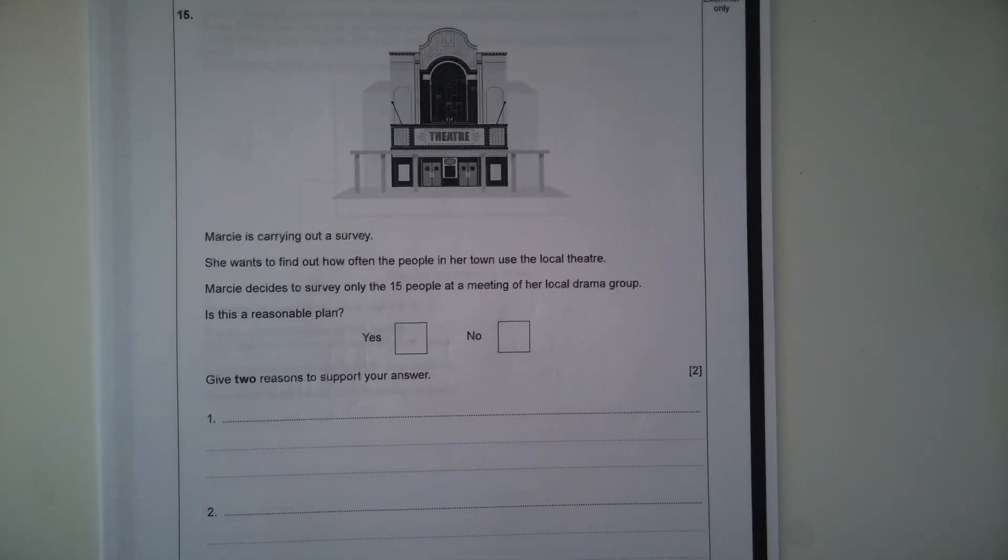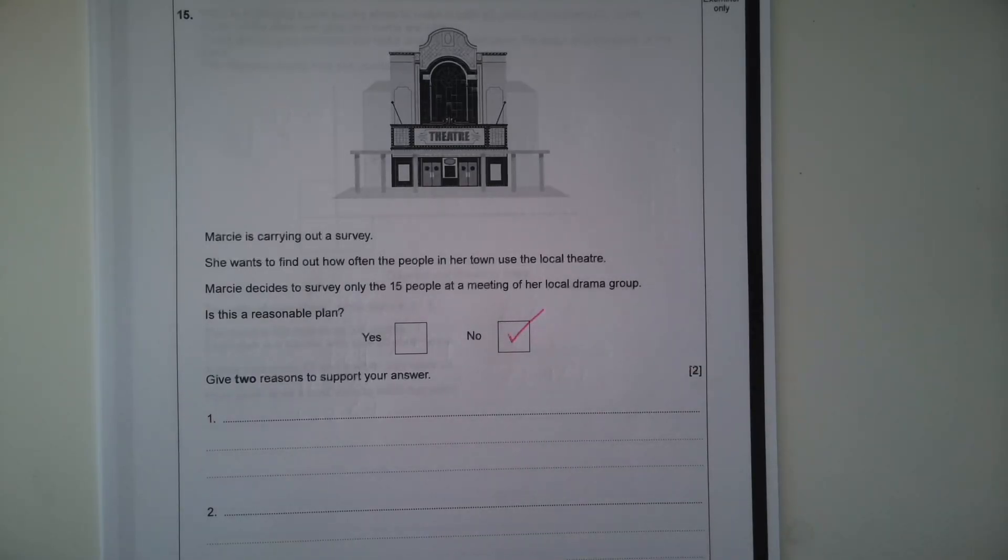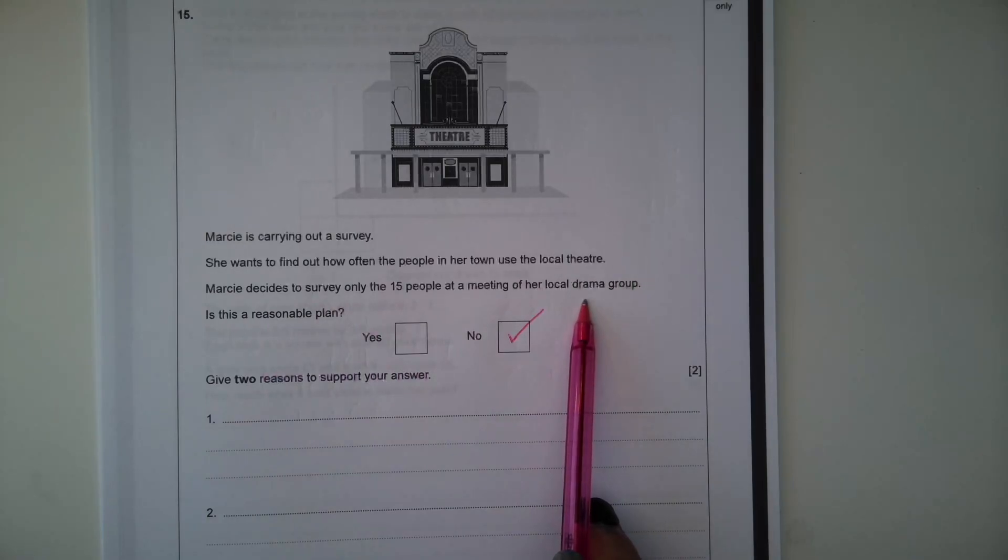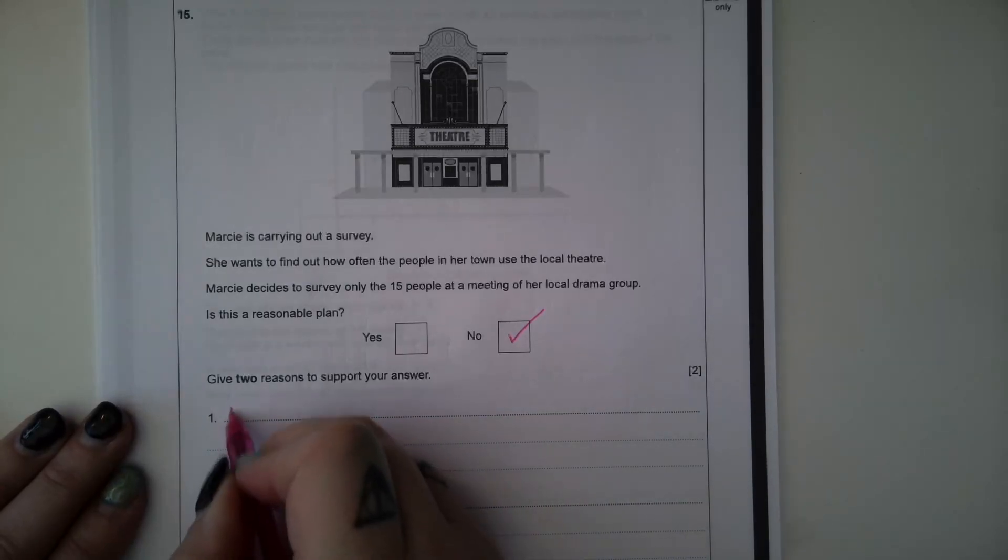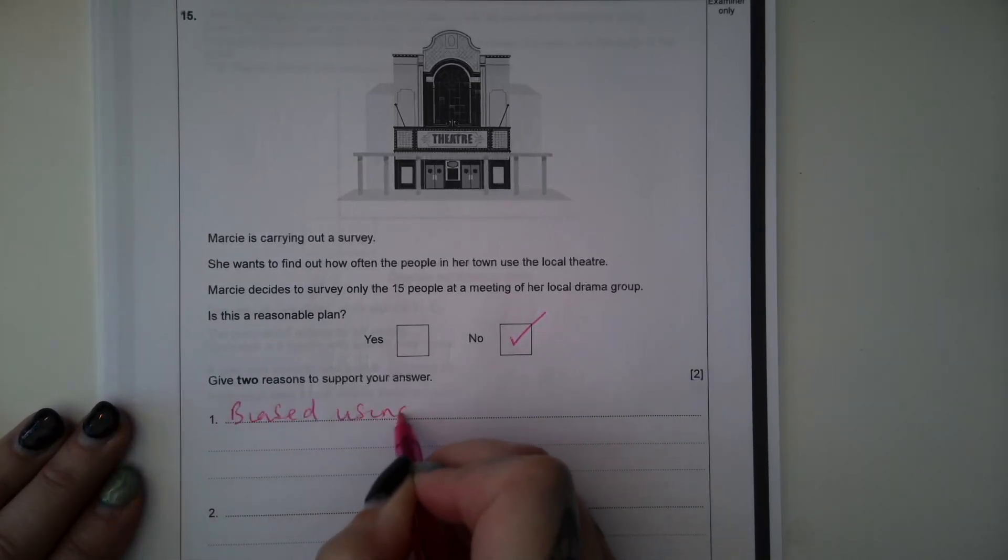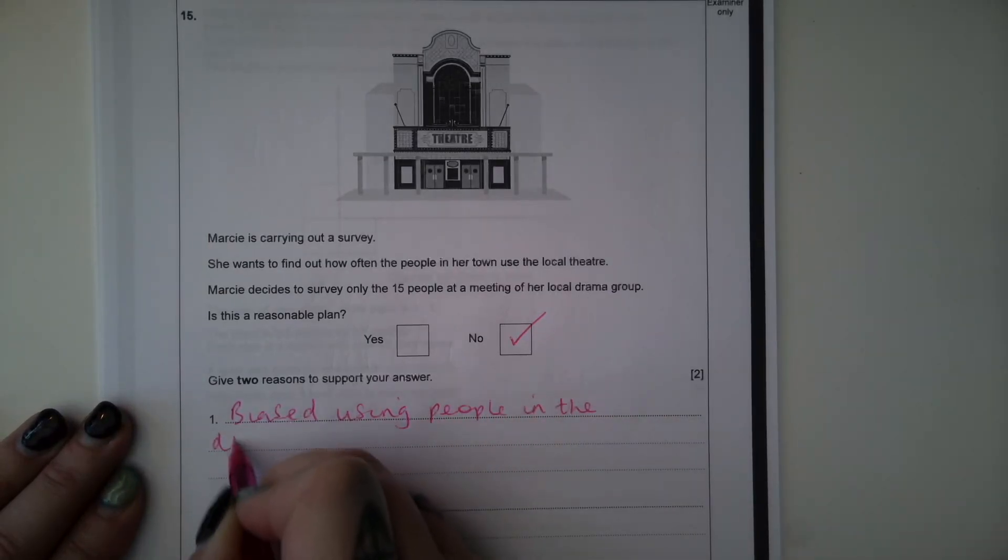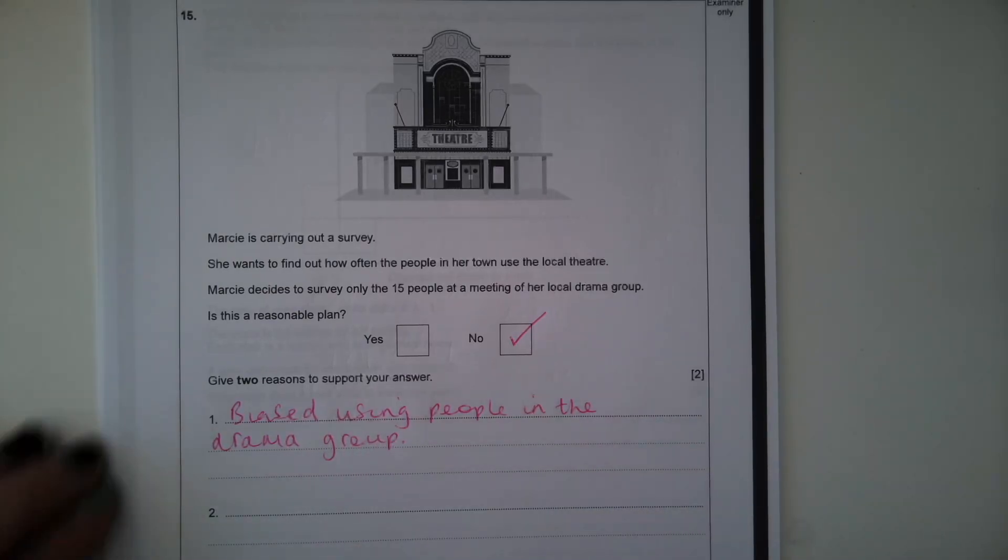And give two reasons to support your answer. So I'm going to say no, this isn't a reasonable plan. And the first reason being she wants to know how often people in her town use the local theatre, but she's only asking people that are in her local drama group. And they're more likely to use the theatre because it's something that interests them as part of their drama group. So it's biased using people in the drama group. So that's the first reason why it's not a reasonable plan.